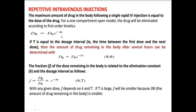Here, k is the elimination rate constant and T is the time interval, which is the dosage interval — the time between the first dose and the next dose — denoted by the symbol lambda. So T is replaced by lambda, and the equation becomes DB = D0 · e^(−k·lambda).